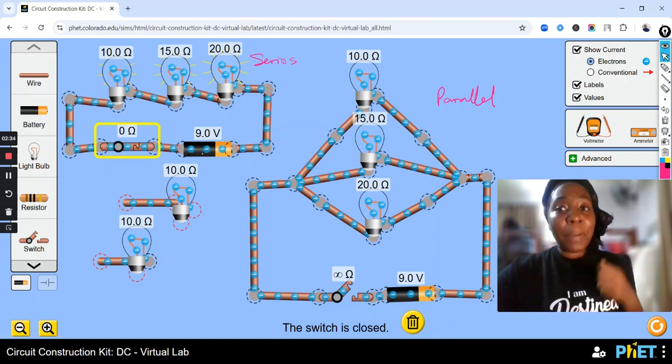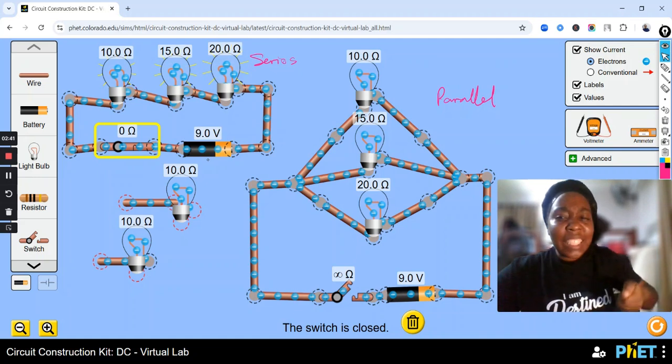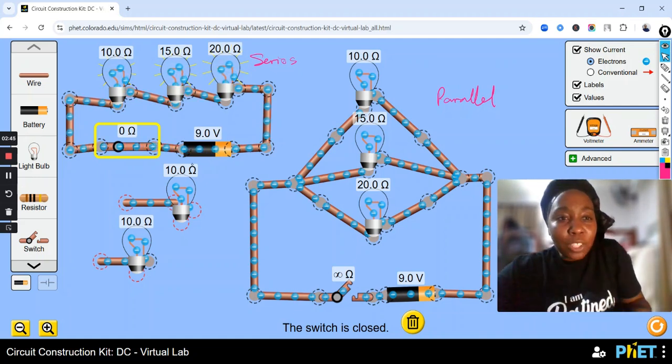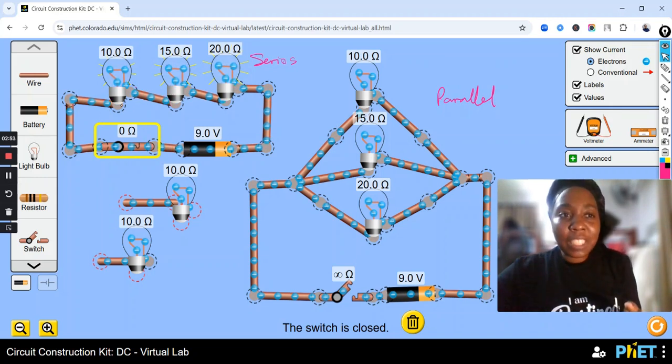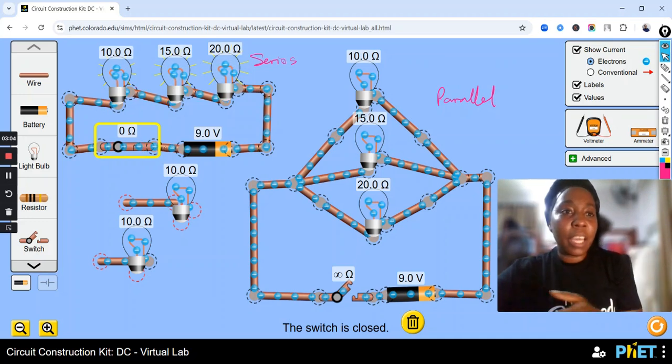And this current is being powered by a battery here which has volts or a voltage in it. And what is voltage? Voltage is that driving force that pushes current to pass through the circuits. And as the voltage passes through each particular resistance or bulb, you have a voltage drop. There's a voltage difference across each load. Each bulb, there's a voltage difference.